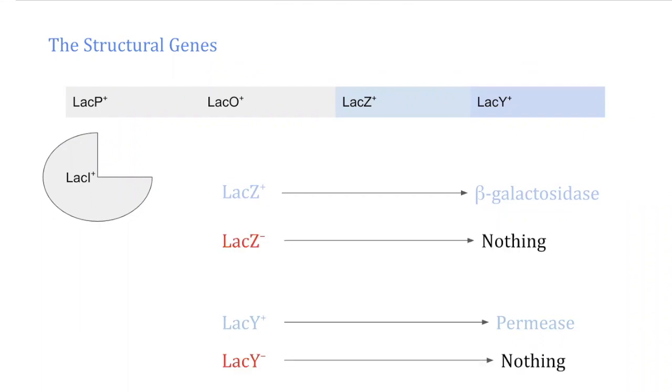Here are the mutations for lacZ and lacY. These mutations cause the structural genes to not be able to produce their respective proteins.